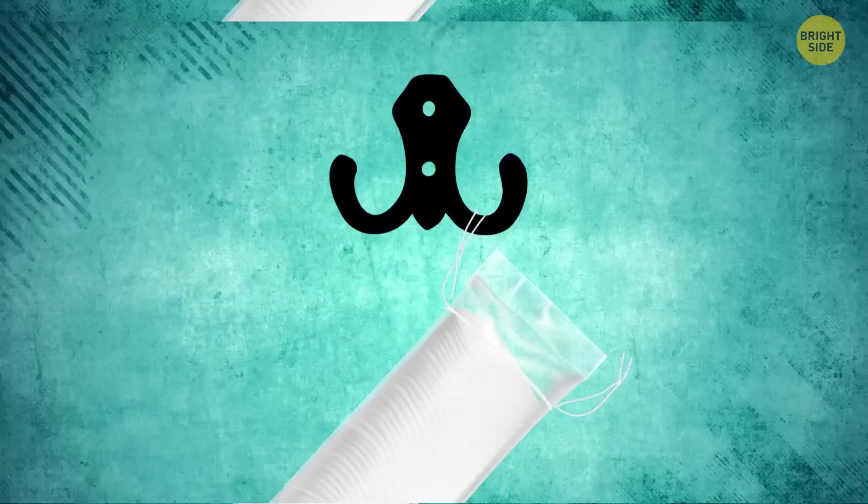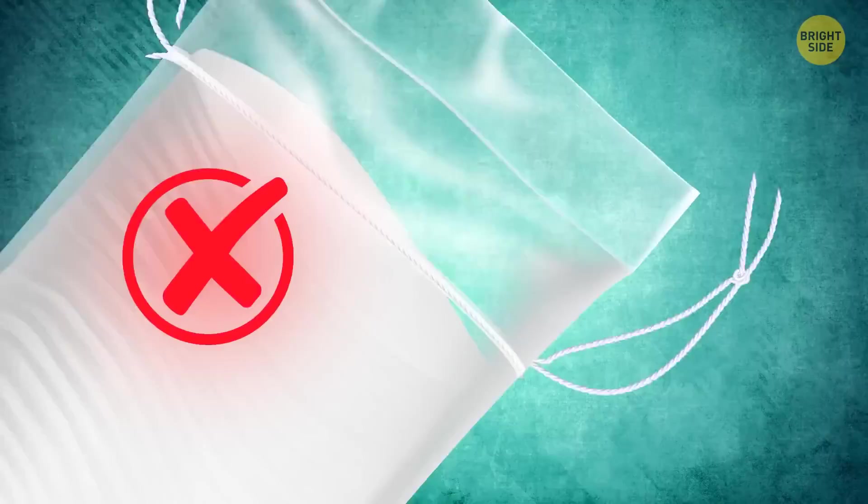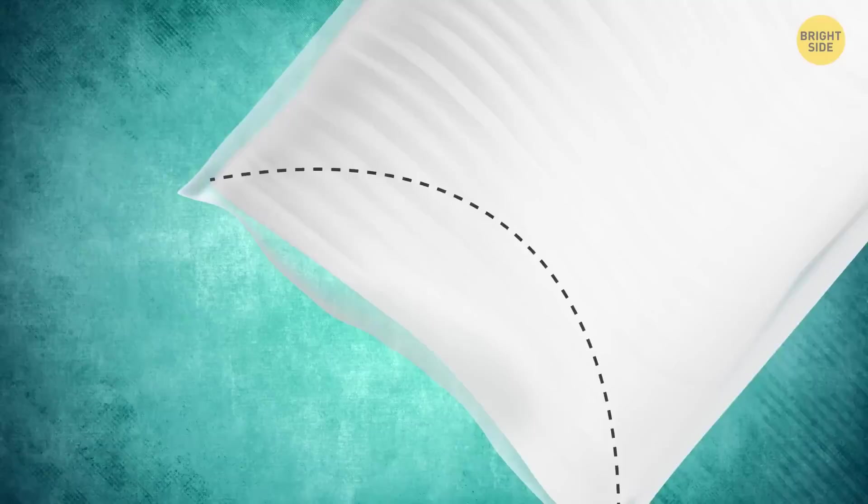Your cotton pads pack has those strings on it, so you can hang it on some hook or holder. There's no need to loosen and tighten the pack again. Check out the bottom of the pack. It has a perforated line. Tear it open carefully, and you're good to go.